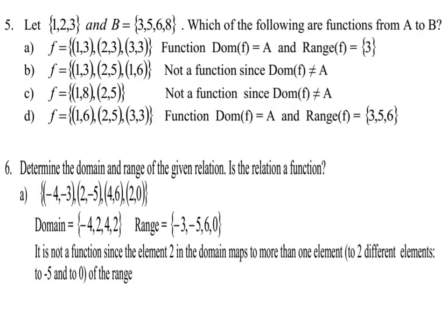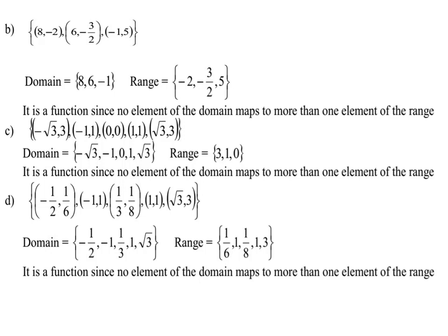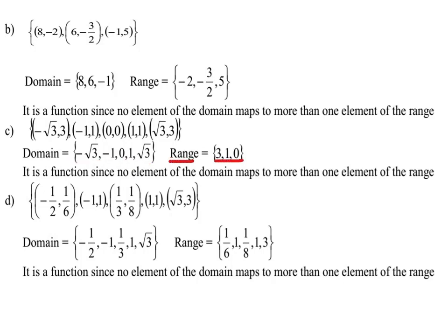(b) The relation contains {(8,-2), (6,-3/2), (-1,5)}. The domain is {8, 6, -1} and the range is {-2, -3/2, 5}. This is a function since no element of the domain maps to more than one element of the range. (c) The relation contains {(-√3, 3), (-1,1), (0,0), (1,1), (√3,3)}. The domain is {-√3, -1, 0, 1, √3} and the range is {0, 1, 3}. This is a function since no element of the domain maps to more than one element of the range.